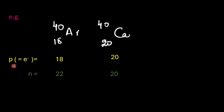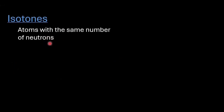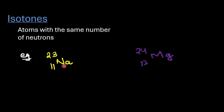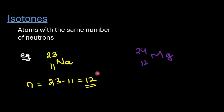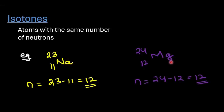Apart from isotopes and isobars, we also have isotones. Isotones are atoms that have the same number of neutrons. Let's take the example of sodium-23 and magnesium-24. To determine the number of neutrons in sodium, we simply do A minus Z, which in this case would be 12. And in case of magnesium, it would be 24 minus 12, which is also 12. Since both atoms contain the same number of neutrons, we call these species isotones.